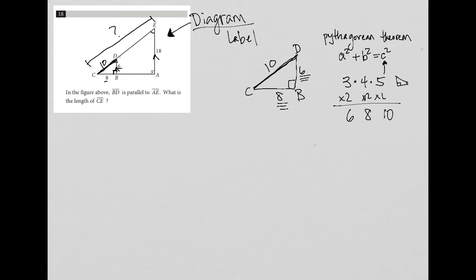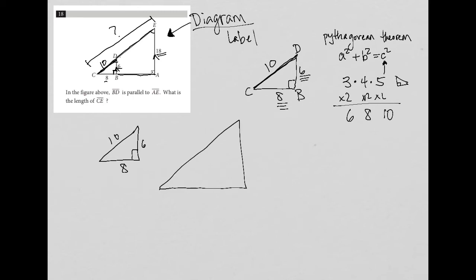So I've labeled CD as 10. I know that AE is 18. There's a trick: typically if I see a shape on top of another shape, I have triangle DCB with its 10, 8, and 6, but I also have the larger triangle EAC with a right angle and side 18. So CA would be 8 plus X, and CE would be 10 plus Y, where Y is the missing part.